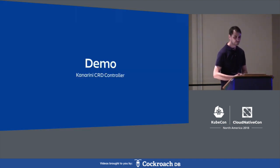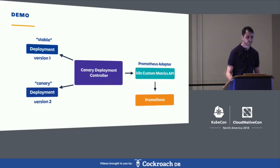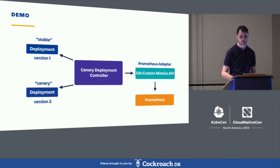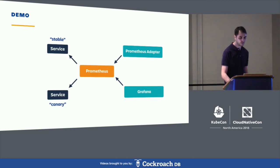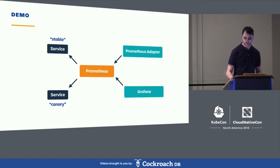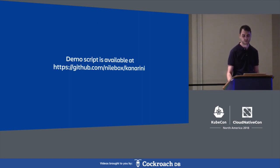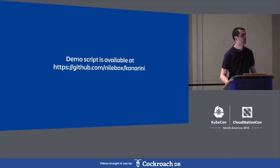Time for the demo. For my demo, I'm running a Kubernetes cluster on my local machine using Prometheus with the Prometheus adapter as an implementation of the custom metrics API. I've also installed Grafana for better visualization. The demo is available on GitHub — both the demo and the controller itself. Please check it out, raise issues, PRs, and so on. At this moment it's mostly a proof of concept, but I'd be happy to make it production-ready.